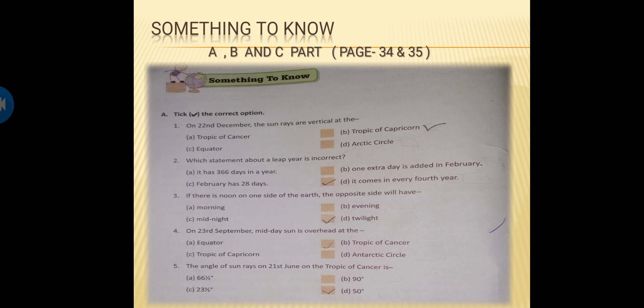Now come to question number 2, which statement about a leap year is incorrect? So option 1 is, it has 366 days in a year. This is correct. B, one extra day is added in February. This is also correct. C, February has 28 days. This is not correct. This is incorrect. And come to fourth option, it comes in every fourth year. This is also correct. So what is the answer? That is asking about the incorrect one. So option C is the correct option.